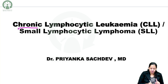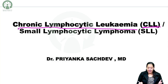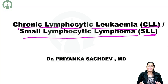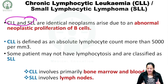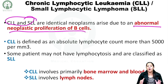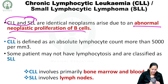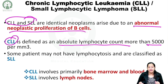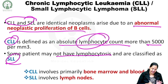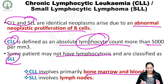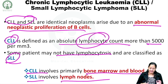In this session I will be discussing chronic lymphocytic leukemia, that is CLL, also known as small lymphocytic lymphoma, that is SLL. CLL and SLL are identical neoplasms that arise due to abnormal neoplastic proliferation of B lymphocytes. CLL is defined as an absolute lymphocyte count more than 5000 per millimeter cube. Patients without lymphocytosis but with other features are classified as SLL. CLL basically involves bone marrow and blood, while SLL basically involves the lymph nodes.